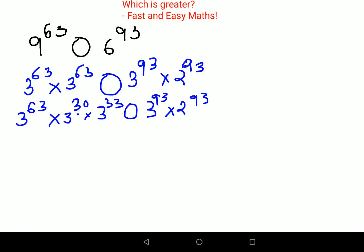Since the bases are the same, I can add the indices. Here I get 3 raised to 63 plus 30, which gives 93, times 3 raised to 33. Then we have 3 raised to 93 times 2 raised to 93. You can clearly cancel these two.